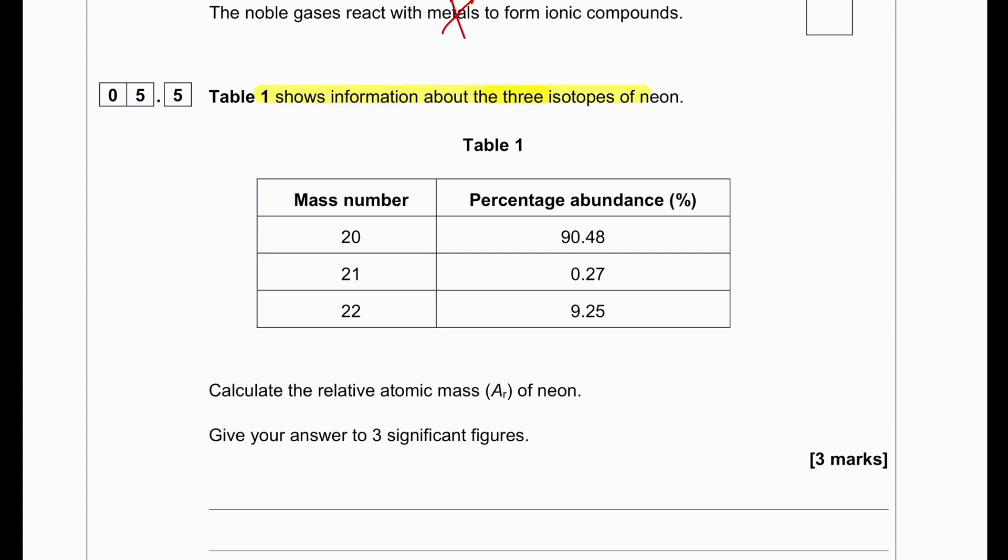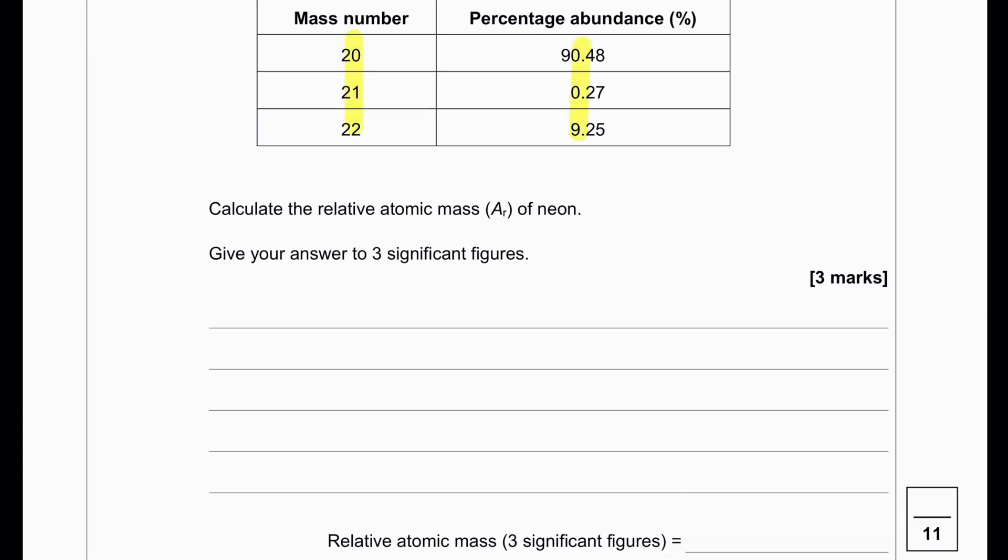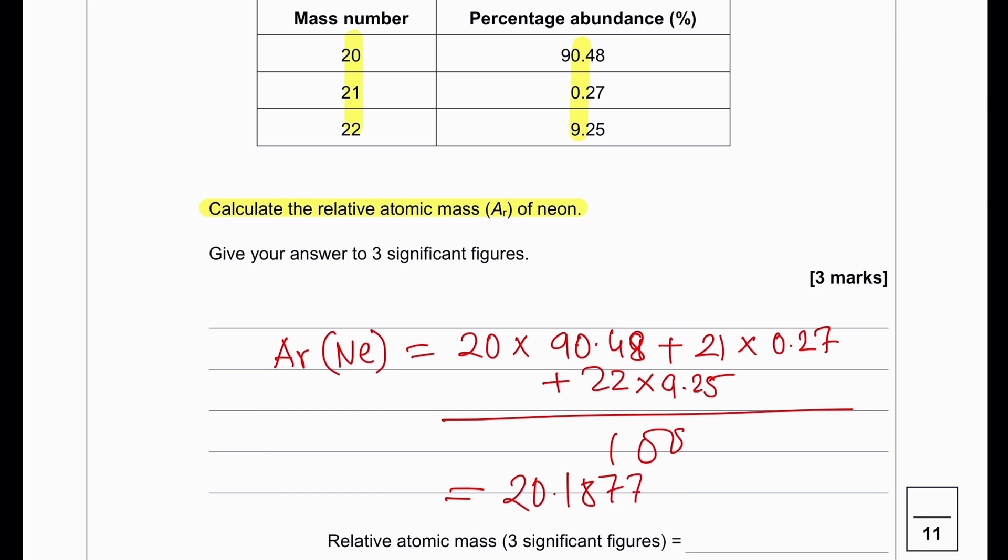Table 1 shows information about 3 isotopes of neon. We can see the mass number and relative abundance. Calculate the relative atomic mass of neon. The Ar of neon will be calculated by multiplying the mass number with their relative abundance. Then we add and continue the process for the other ones. Then we divide the whole thing by 100. This gives us a value of 20.1877. But our question asks the answer in three significant figures, so we have to round it up to 20.2.